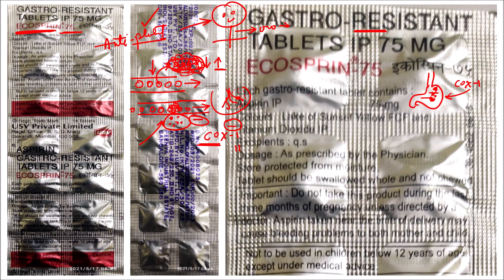The active constituent is aspirin. The strength is 75 mg. The dose is as prescribed and as directed by the physician. Protect from sunlight and moisture. The tablet should be swallowed as a whole and not chipped. Do not take the drug when going for an operation or in case of pregnancy. Not to be used in children below 12 years of age. Especially avoid in pregnancy and when you have elective surgery.